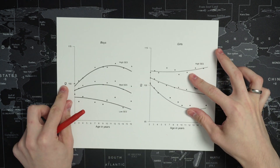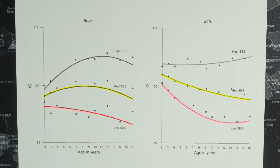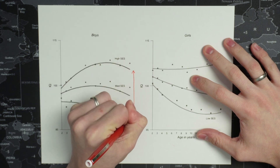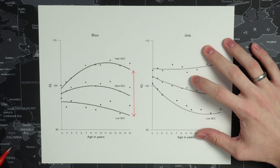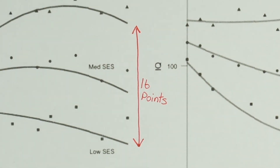Here are the IQs of children separated by socioeconomic status. As you can see, already at 2 years old, children of poorer families have on average a lower IQ than those of richer families, and it gets worse as they grow up. By the time the children reach the age of 16, the gap almost triples. On average, high SES adolescents have 16 IQ points more than low SES adolescents.